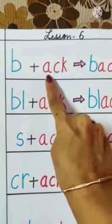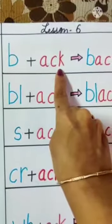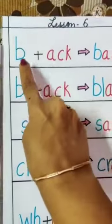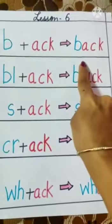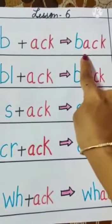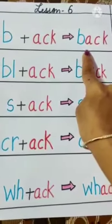First word is a-k. A-k. And when we add b to it, it becomes b-a-k. Back. Back. Back is a body part.